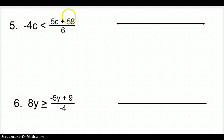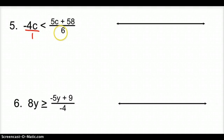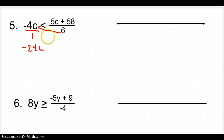Number 5, a couple trickier ones. We have negative 4c is less than (5c + 58) over 6. Treating it like an equation, I put negative 4c over 1, which lets us cross multiply. I take 6 times negative 4c to get negative 24c, keeping the less than inequality.